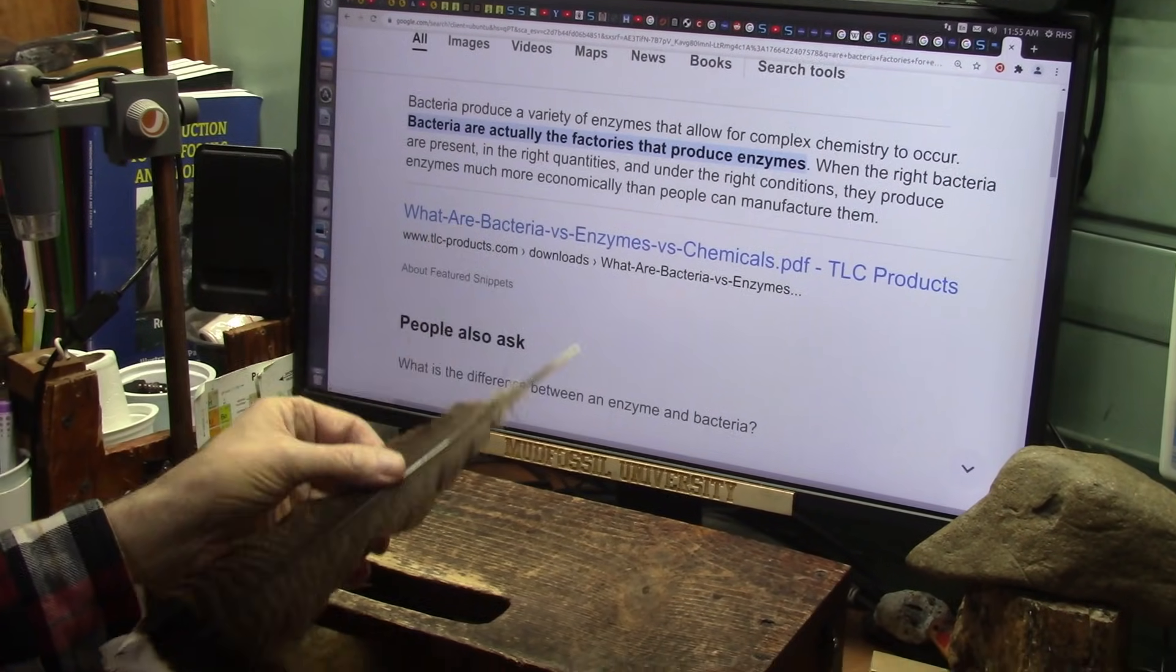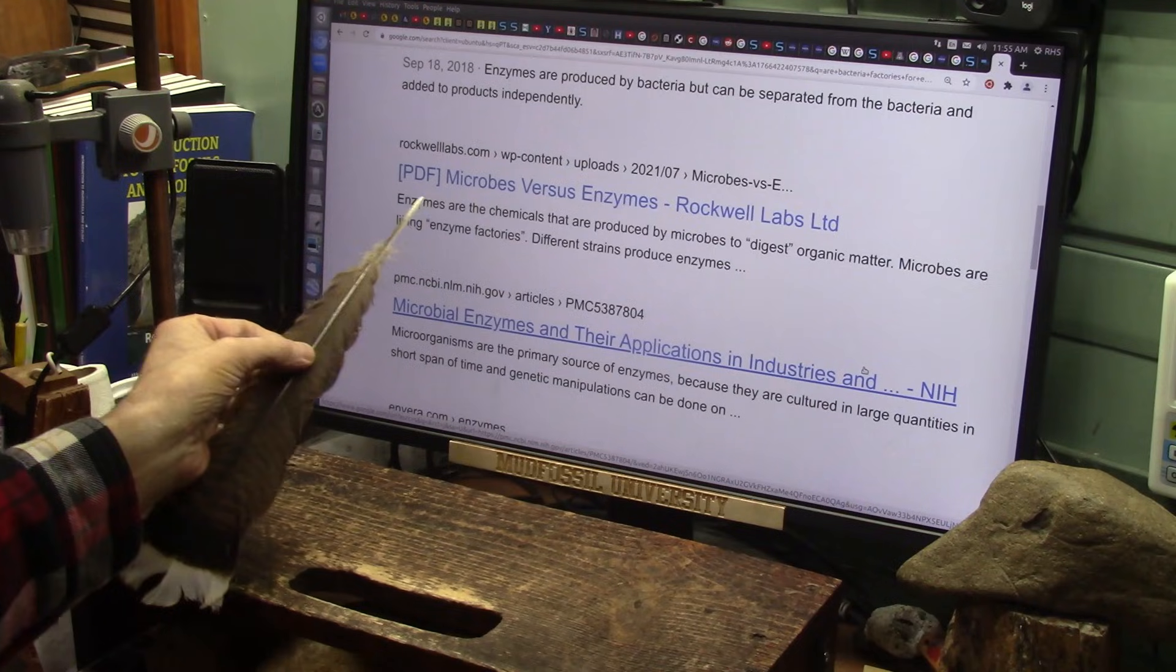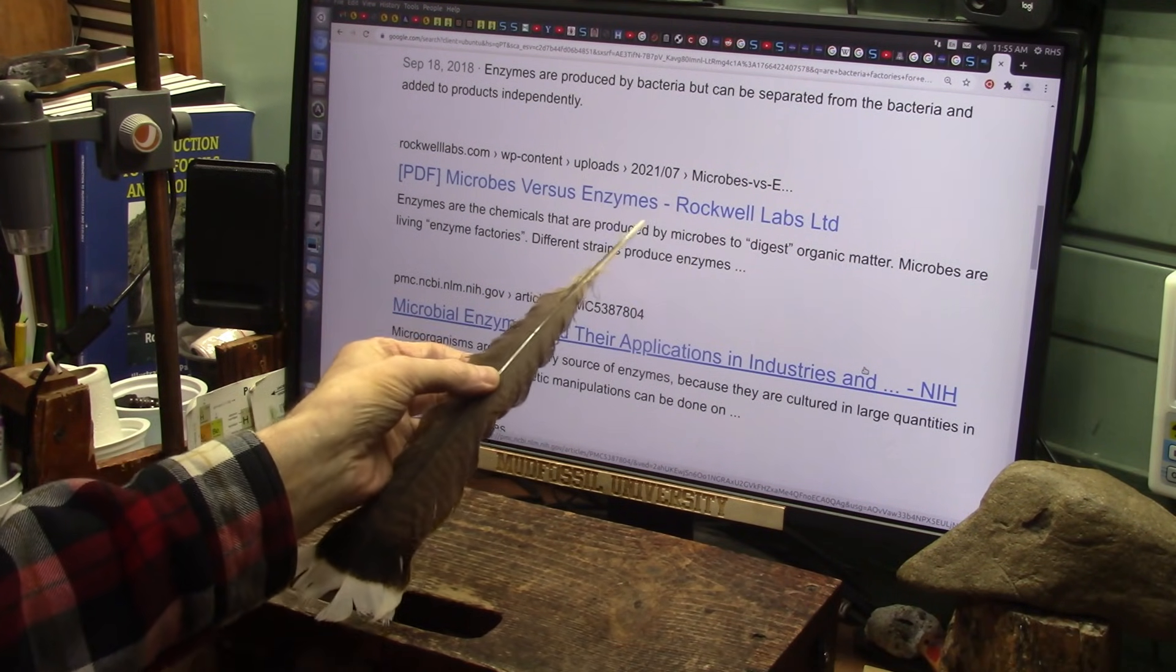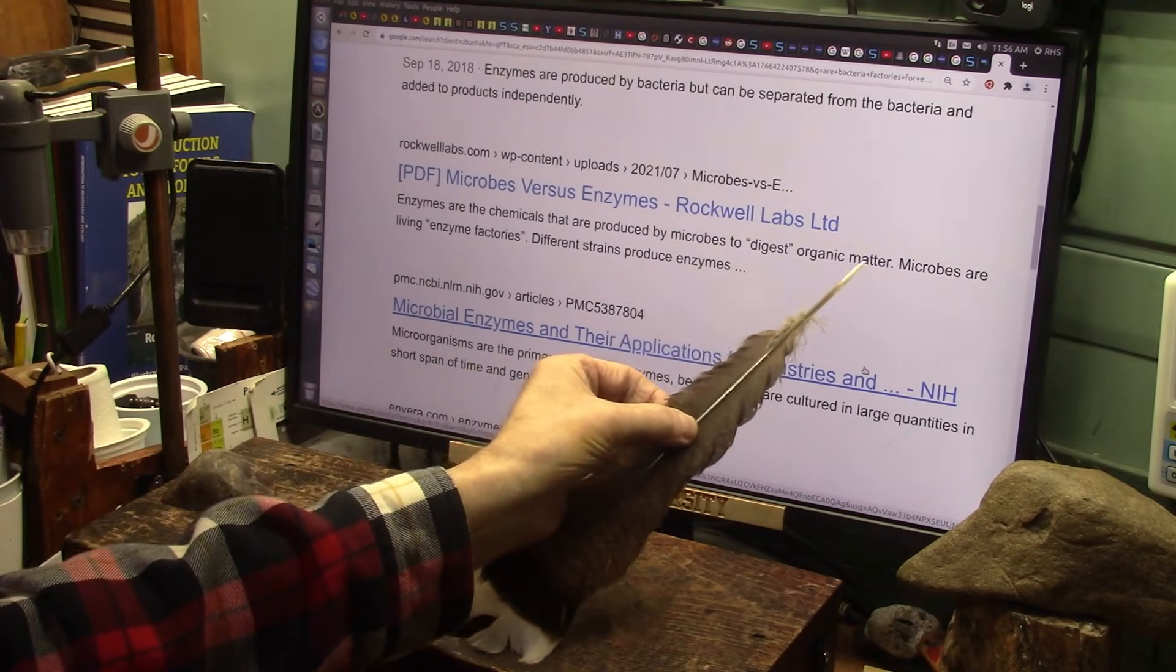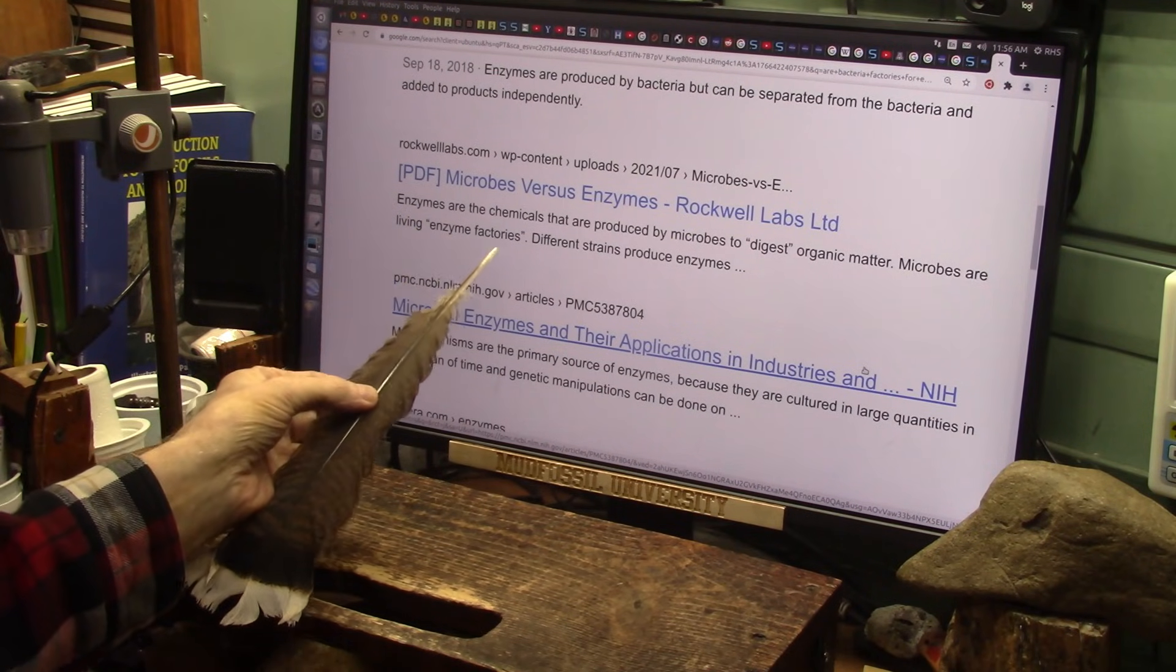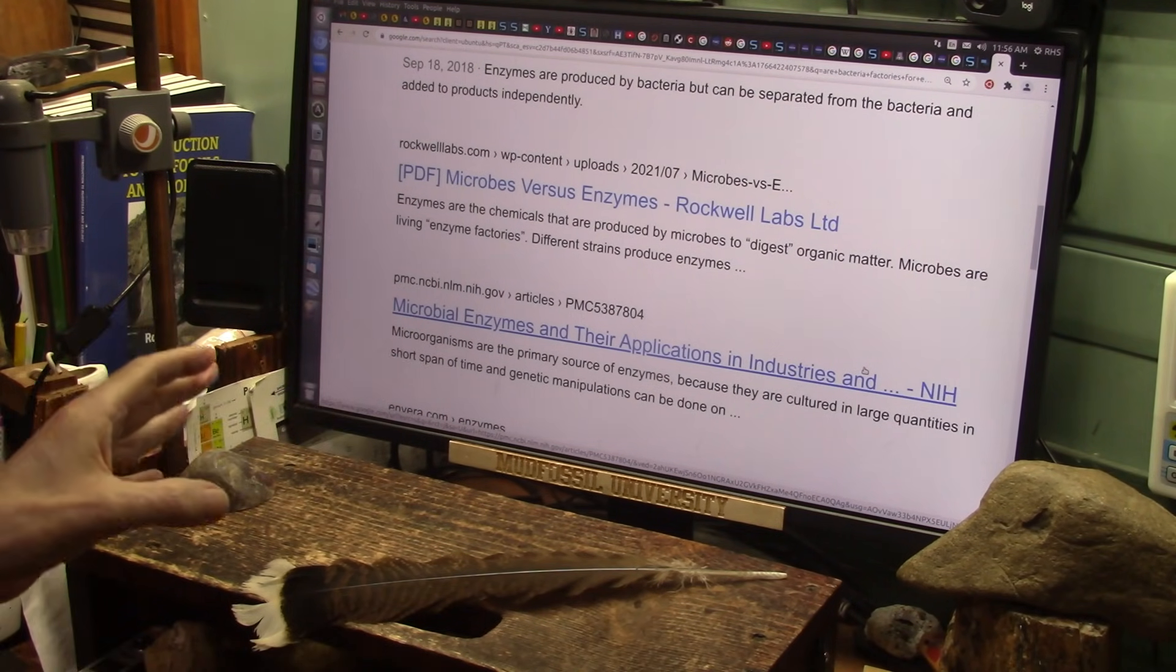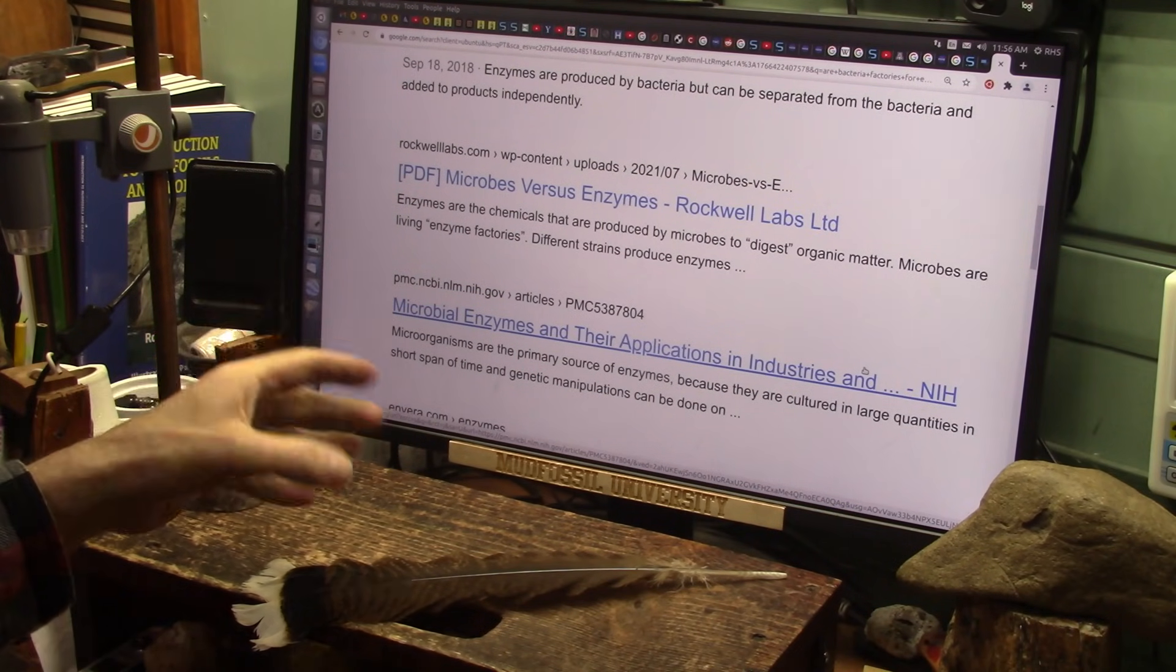Now here's another one: microbes versus enzymes. Enzymes are the chemistry set that are produced by the microbes, which are the little bacteria. They're produced to digest organic matter and to create immunities, too. Microbes are living enzyme factories. Every different strain of bacteria creates its own little type of particle, and there's at least 75,000 different types of bacteria that they know about now.